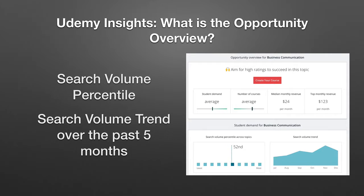The next thing you see is the search volume percentile — that is how popular this topic is as a search topic. A value of 52 is pretty unimpressive, and it's telling you that there's not that much demand for this topic in Udemy. And then the search volume trend over the past five months: you can see November is always a good month because of Black Friday, but you get a picture of what the trend is like.